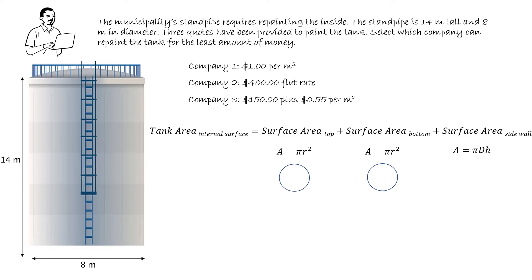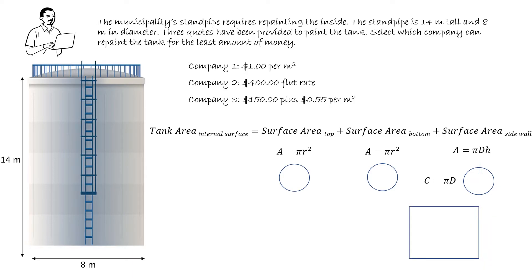The cylinder wall sides can be calculated using two lengths. The first length is the circumference of the cylinder — the perimeter around the top of the tank is pi times the diameter. If we were to take the tank and unravel it, we'd see that it is actually a rectangle, where the top is the perimeter of the tank unraveled, and its height is the other length.